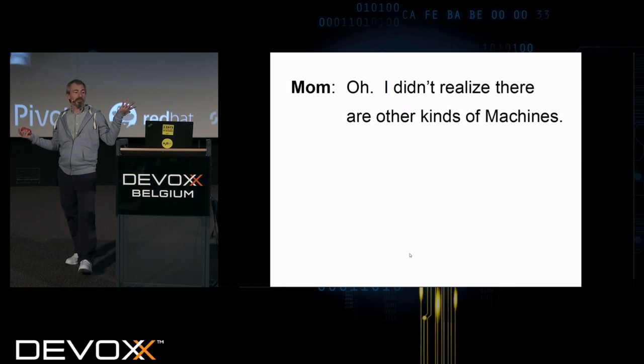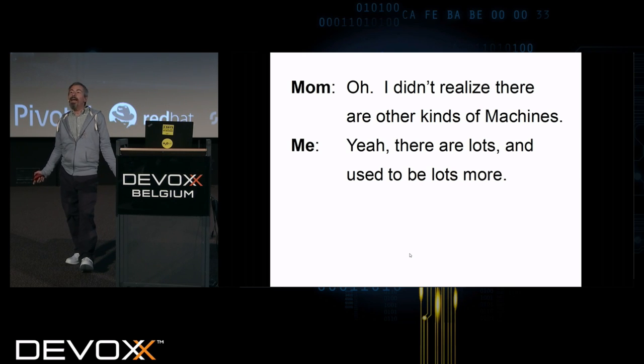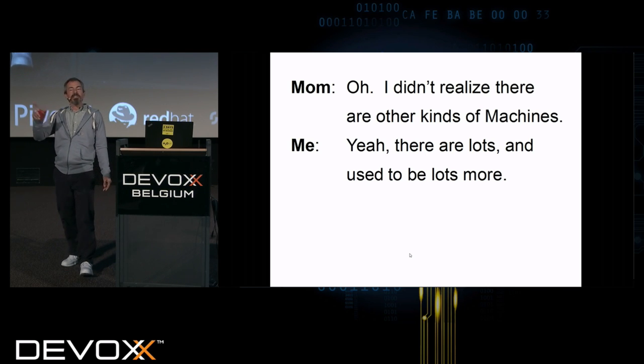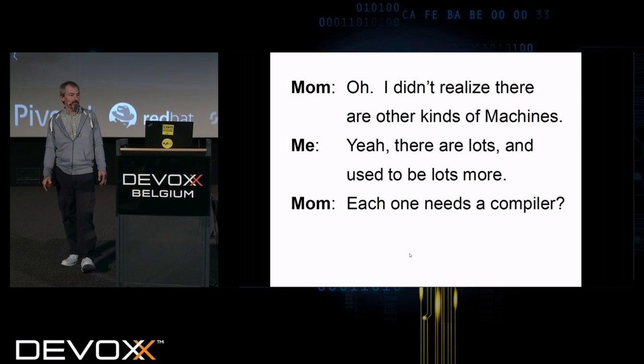Oh, I didn't realize there are other kinds of machines. Yeah, there are lots. Used to be lots more. Everyone's x86 now. But actually, there's still lots because most of your cell phones have all kinds of funny processors in them besides either an x86 or an ARM.